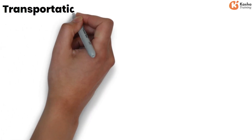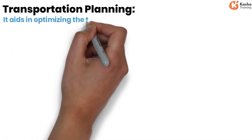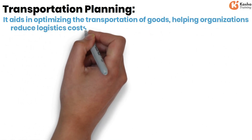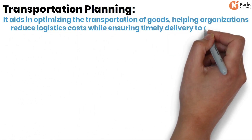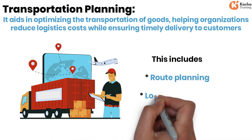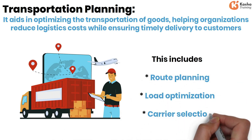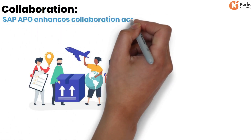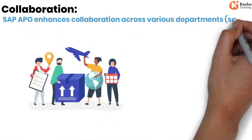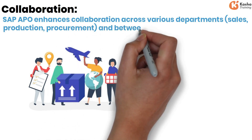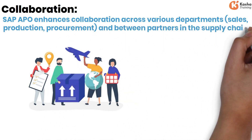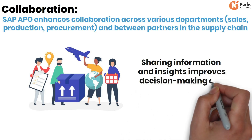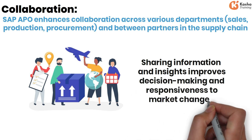GATP ensures that customer orders are fulfilled on time by assessing inventory across various locations and sources. For transportation planning, SAP APO helps organizations reduce logistics costs while ensuring timely delivery to customers, including route planning, load optimization, and carrier selection. SAP APO also enhances collaboration across departments — sales, production, and procurement — and between supply chain partners, improving decision making and responsiveness to market changes.